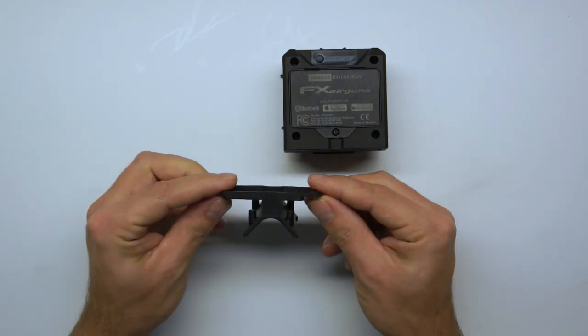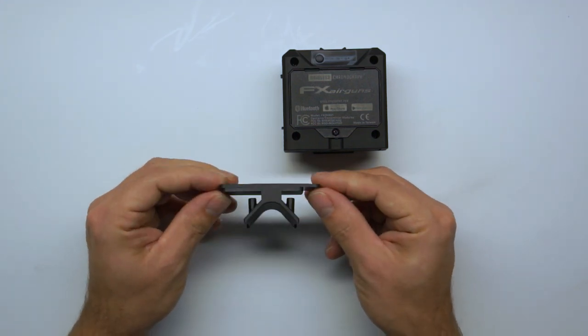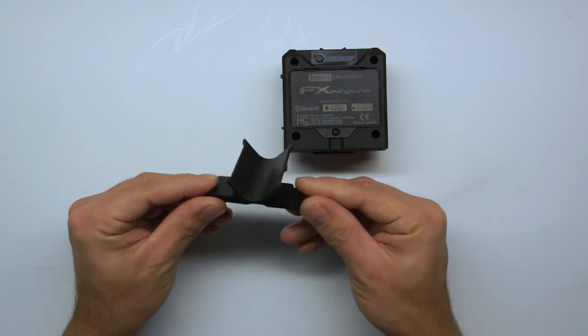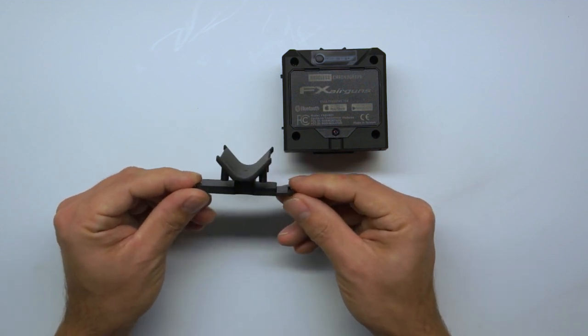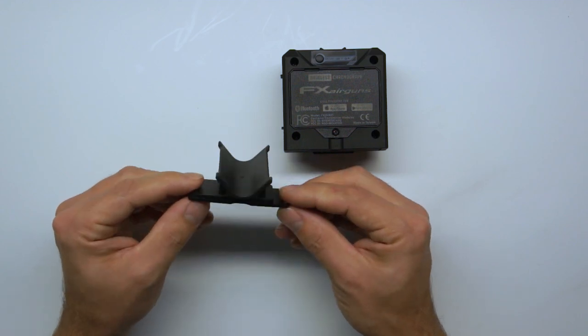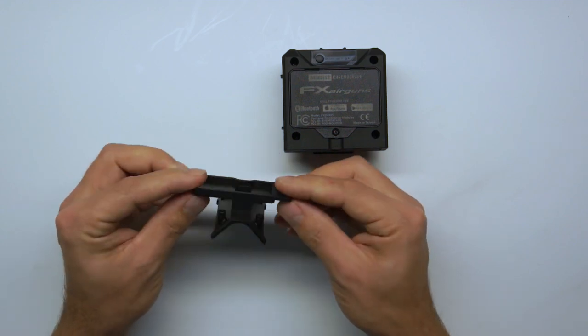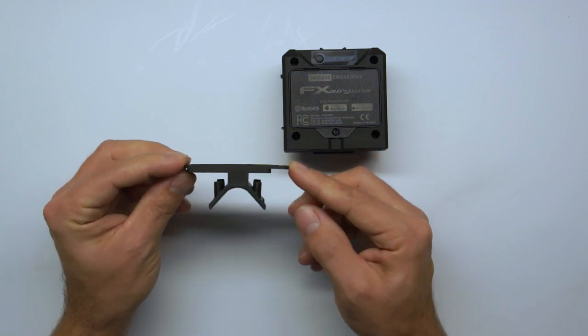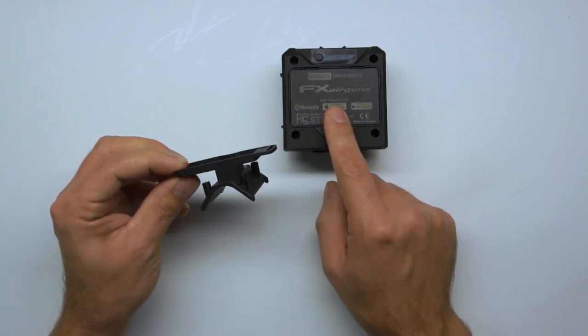This piece is a mounting bracket like a lot of other guys on the internet are making by themselves, 3D printing it to mount to the barrel or to the gun itself, and I think FX did the smart thing including this now when you buy your pocket chronograph.